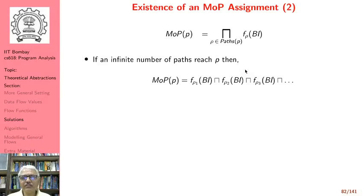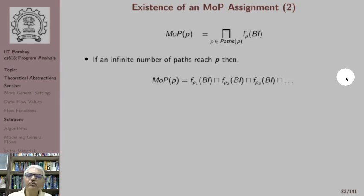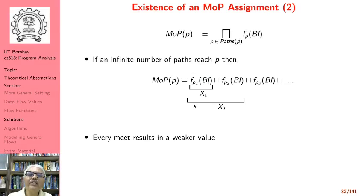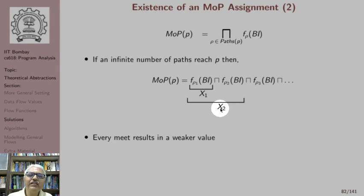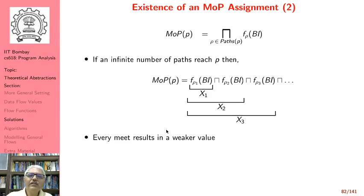If we cannot say that the number of paths is finite, we need additional argument. MOP is then defined as F_rho1 applied to Bi, F_rho2 applied to Bi, F_rho3 applied to Bi, and so on — an infinite meet. If we name the first meet x1 and the next x2, then x2 is weaker than x1, because x2 equals x1 meet something else. Every meet results in a weaker value.